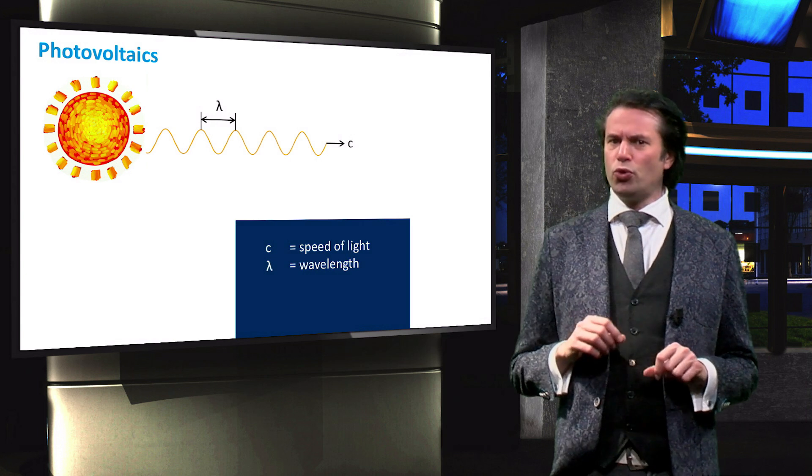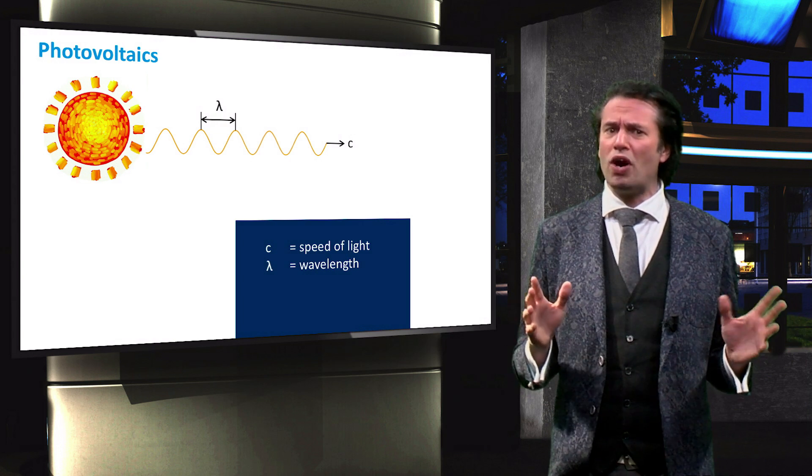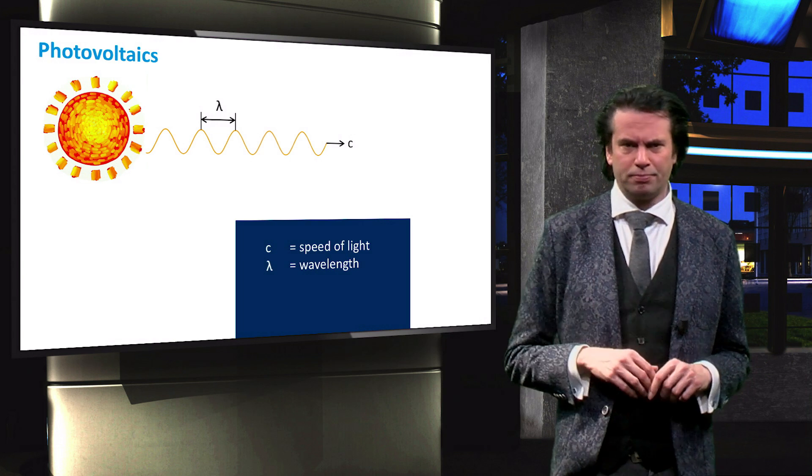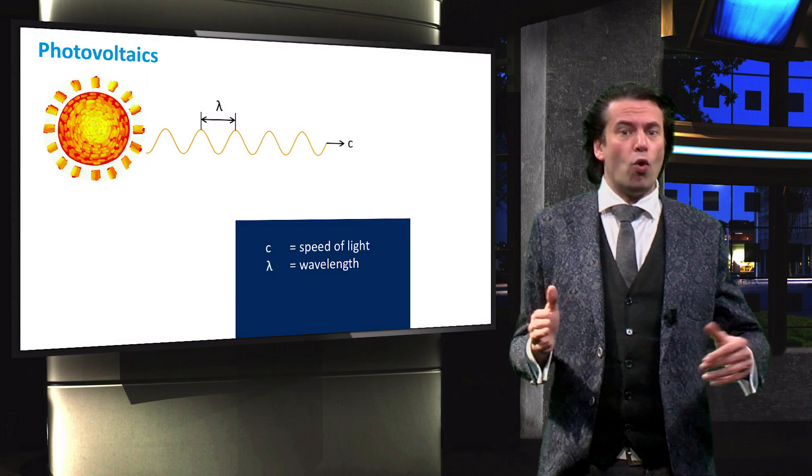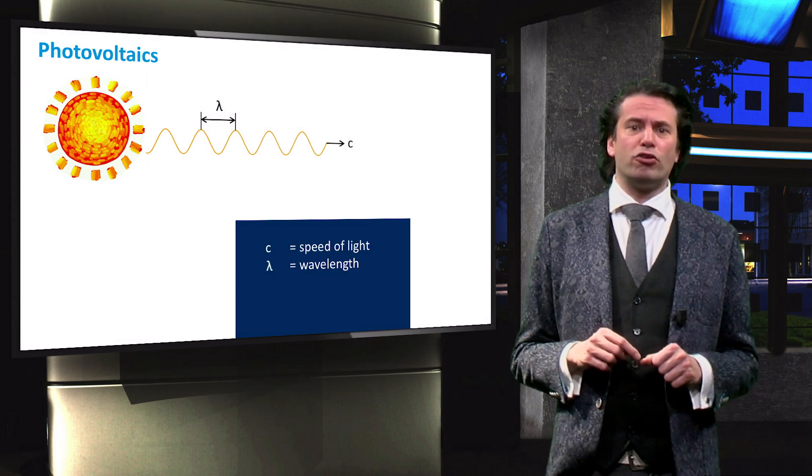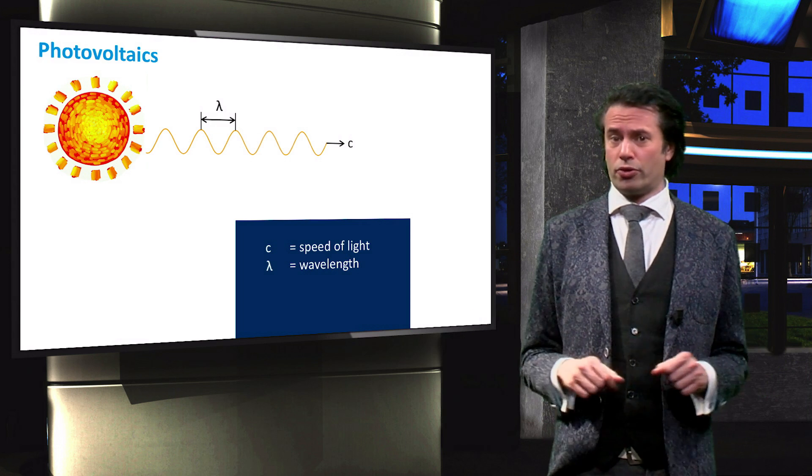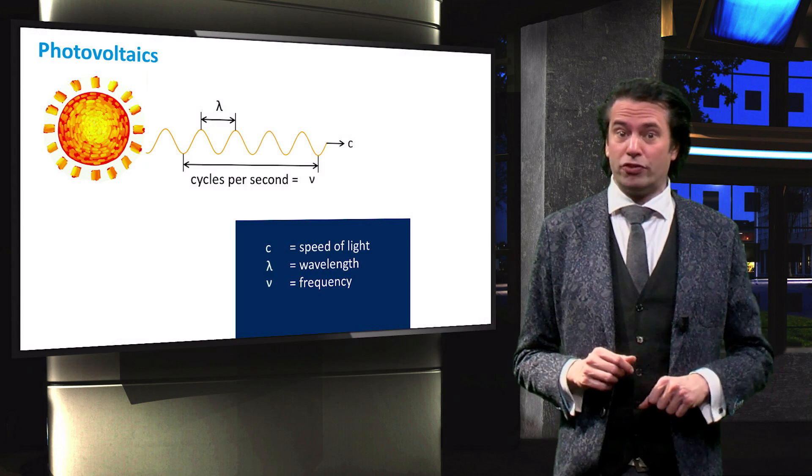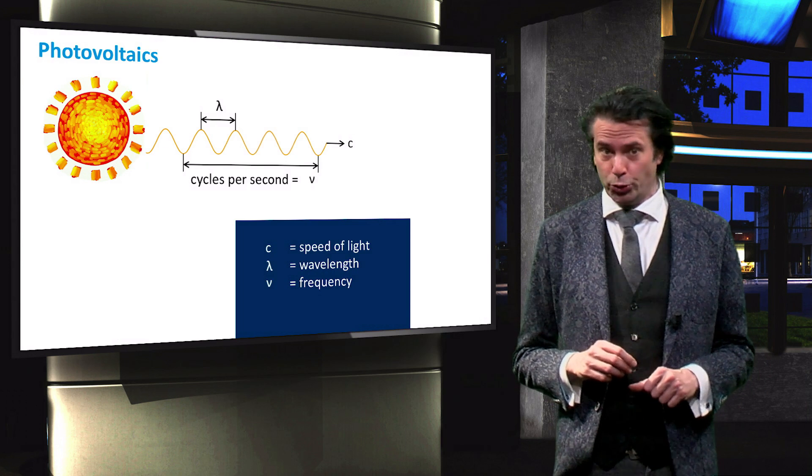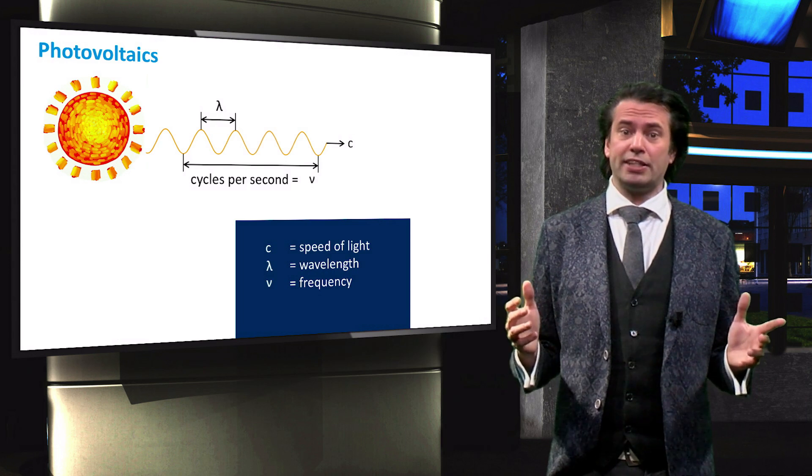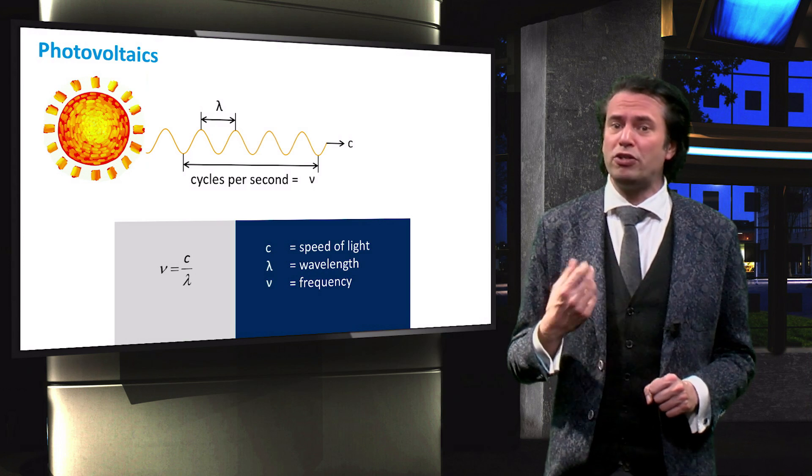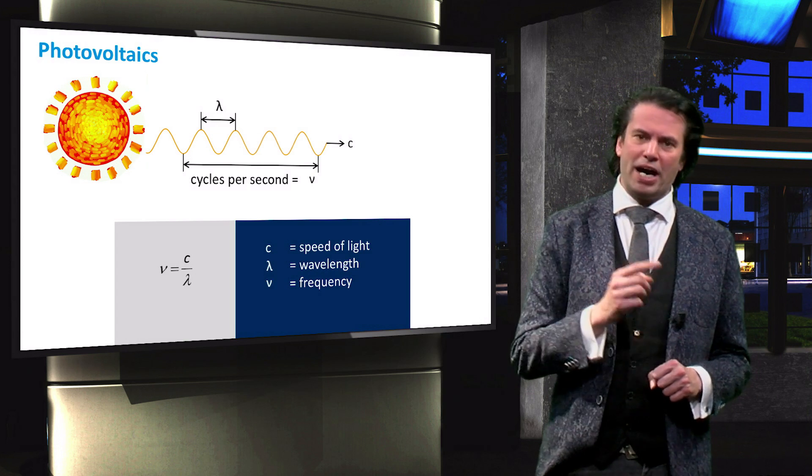The distance between two wave peaks is known as the wavelength, indicated by lambda. Over a distance of one wavelength, the wave undergoes exactly one cycle. The number of cycles that occur in one second is known as the frequency, indicated by nu. The frequency expressed in hertz is equal to the speed of light divided by the wavelength.